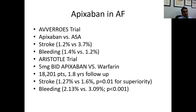In atrial fibrillation, the AVERROES trial compared apixaban 2.5 or 5 mg to standard-dose aspirin in patients with non-valvular atrial fibrillation to prevent stroke. The risk of stroke in patients on apixaban was 1.2% versus 3.7% in patients on aspirin in non-valvular atrial fibrillation. Bleeding risk was similar — approximately 1.4% in the apixaban arm versus 1.2% in the aspirin arm.